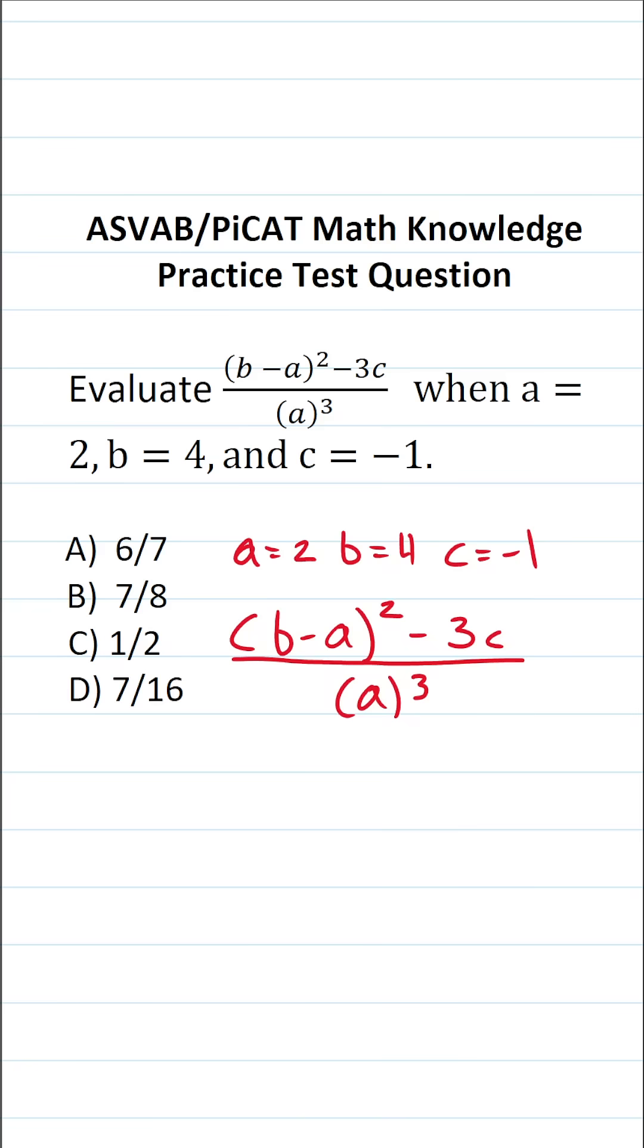So the next thing I'm going to do is plug those values into this expression accordingly. This becomes 4 minus 2 squared minus 3 times negative 1 all over 2 to the third power. And let's work this out step by step.